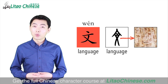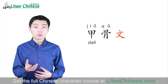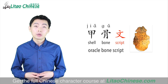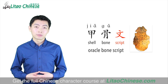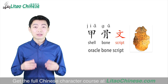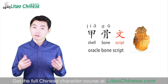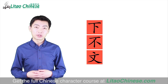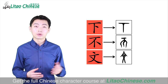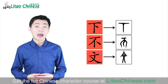Let's look at two examples with the character Wen. Jiāgǔwén. Jiā means shell, gǔ means bone, and Wen here means script. Jiāgǔwén refers to oracle bone script — it was a form of Chinese characters used on turtle shells or animal bones, and is the earliest known form of Chinese writing. In our lessons, when I introduce a Chinese character for the first time, I normally show you its current written form first, then its ancient or original written form. These ancient forms are almost all oracle bone scripts, called Jiāgǔwén in Chinese.